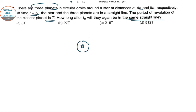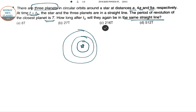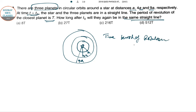Suppose this is the star, and the planets are arranged at distances A, 4A, and 9A from the star. The time period of rotation of a planet is proportional to the orbital radius to the power 3/2 — that is Kepler's third law: T ∝ A^(3/2), where A is the radius of orbit.